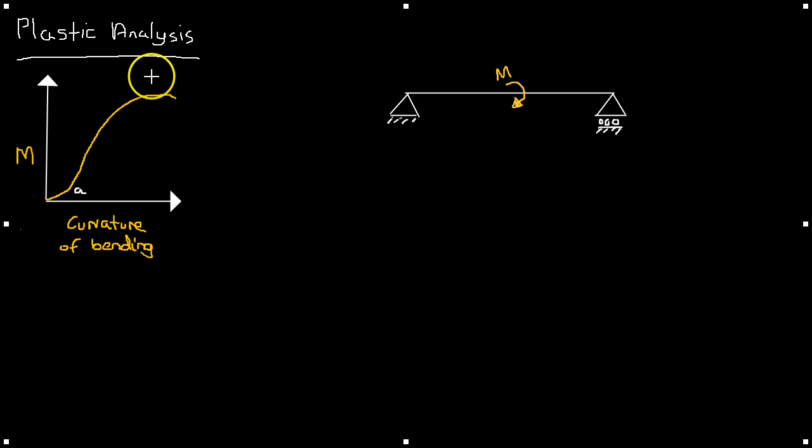This is known as a hinge with a constant moment, and this is known as a plastic hinge. And I've just drawn this on this diagram - this is just what the deformed shape would look like when a plastic hinge occurs.